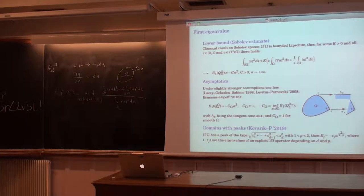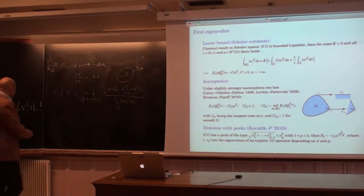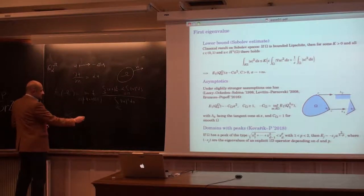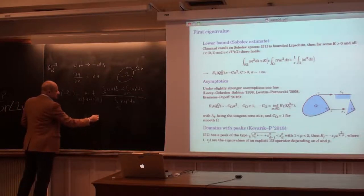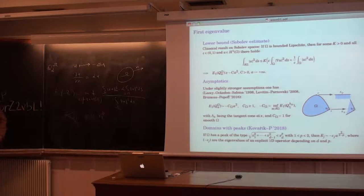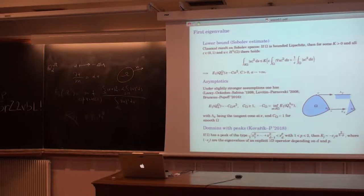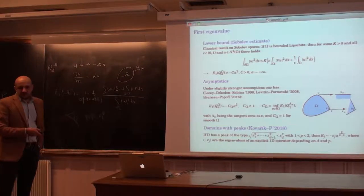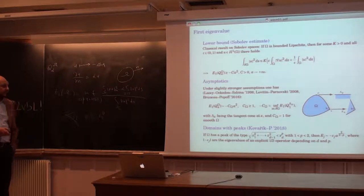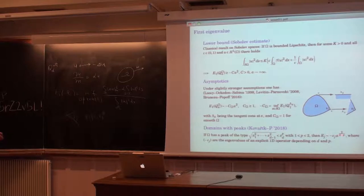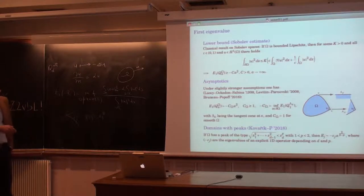Let me say a word about our recent paper on domains with cusps, i.e., domains which are non-Lipschitz. If you have a power-like cusp, in order to look at the problem we need to assume that the power p is between 1 and 2. If p equals 1 it is Lipschitz; if p equals 2 or bigger, the Robin Laplacian is not semi-bounded. In that case the first eigenvalue is not quadratic anymore; the main term can grow with any polynomial speed.